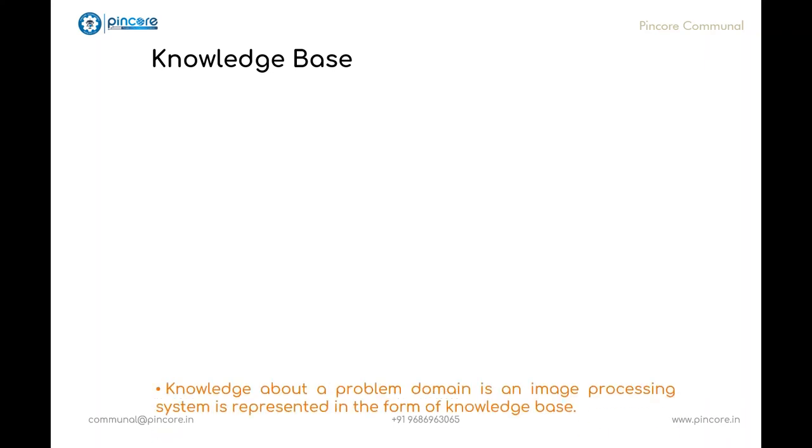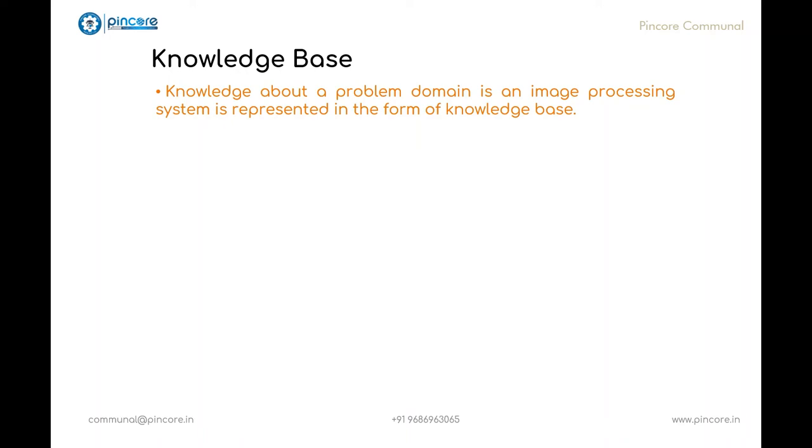Now let's look into another important topic in fundamentals, that is knowledge base. Knowledge about a problem domain will be coded into the image processing system in the form of knowledge base. All the information that is required to process an image will be present within this knowledge base. For instance, this knowledge base can be as simple as detailing the regions of an image where the information of interest will be known, or else this knowledge base can be quite complex such as interrelated lists of major possible defects in an image database which contains high resolution satellite images. So it is mainly dependent on the application. Also, the knowledge base will control the interaction between the models. This was all about the fundamental steps in digital image processing.